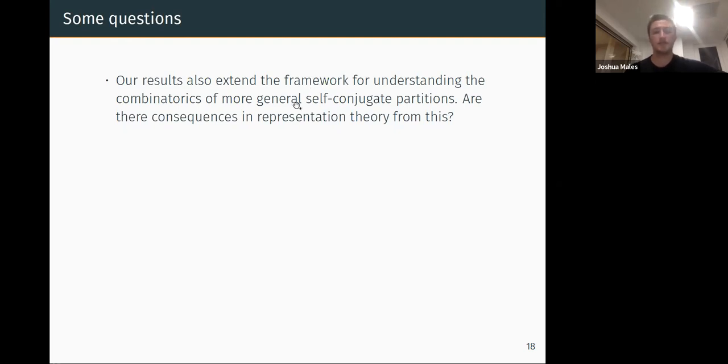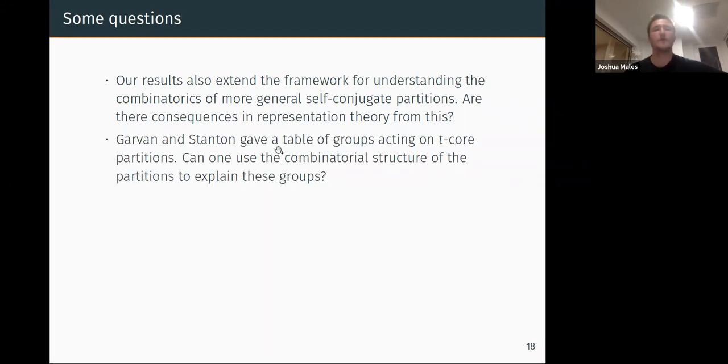Another question is that in these influential papers of Garvan-Kim-Stanton, in particular one of Garvan and Stanton, they give a table of groups—certain dihedral and cyclic groups that act on t-core partitions. Can we use the combinatorial structure of the partitions that we give to explain these groups? This is something that Stanton brought up again a couple of weeks ago in a seminar. Can we use these explicit descriptions of partitions to explain these dihedral groups that act?